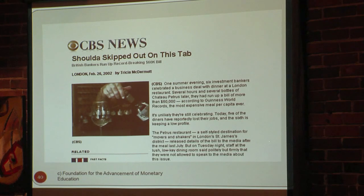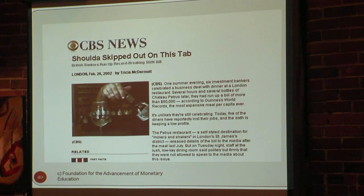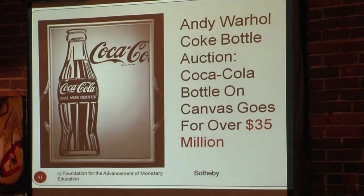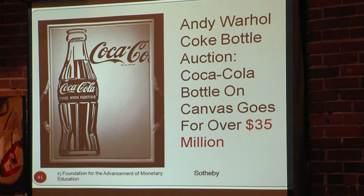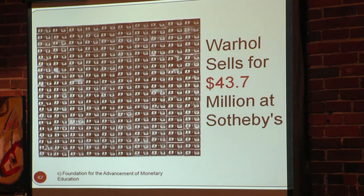If you think 62,000 dollars for dinner is outrageous, there is a Coke bottle that sold recently for 35 million dollars. And if you think that's weird, this is a picture Andy Warhol made — it's a picture of dollar bills, just a picture — and it sold for 43 million dollars. Now I want to say a little bit about the structure of the banking system and how the folks in the banking system are gambling with your savings and your promises of future payment.